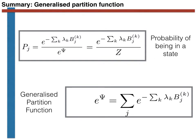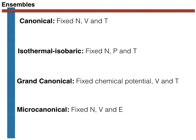This whole procedure led us to an expression for the probability of being in accessible microstate j. Through this procedure we also defined the generalized partition function. We then discussed how we arrive at the various different ensembles by changing the set of extensive variables that are constrained to have a particular value. The canonical ensemble comes about if you explicitly fix the number of atoms and the volume of the system, with a constraint that the average energy is finite and the temperature drops out in the Lagrange multiplier.